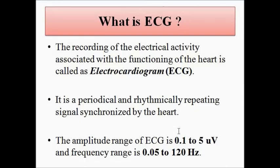It requires suitable signal conditioning, processing, amplification, and noise removal. The frequency range of ECG is from 0.05 to 120 hertz. So the amplitude range is 0.1 to 5 microvolt and the frequency range of ECG is from 0.05 to 120 hertz.